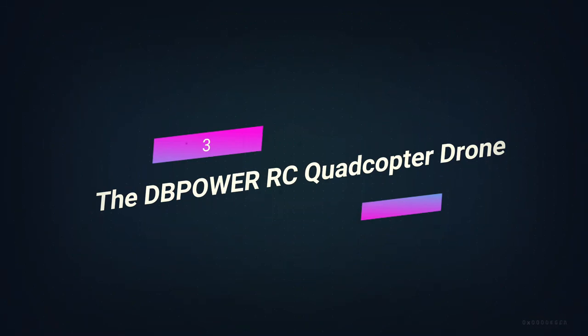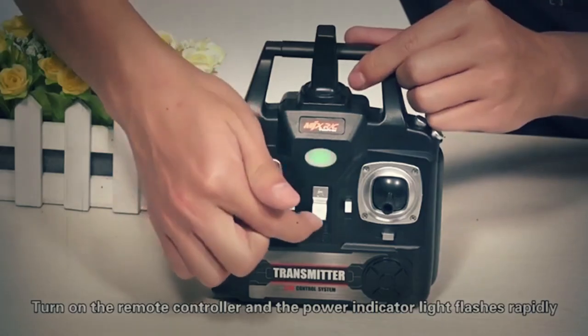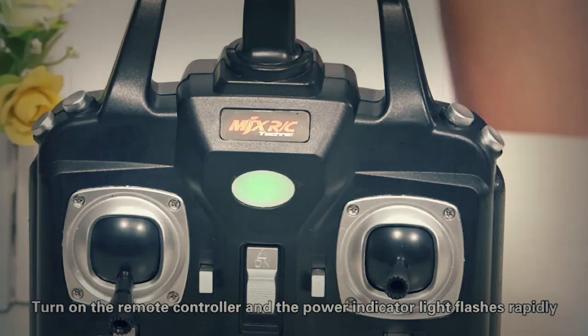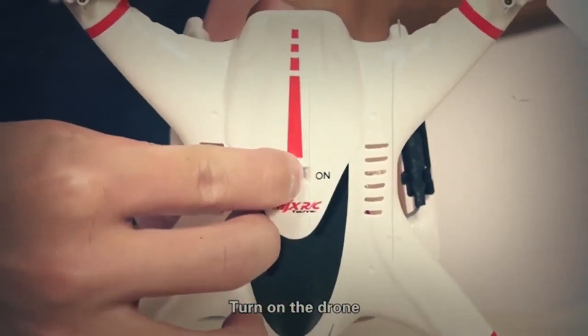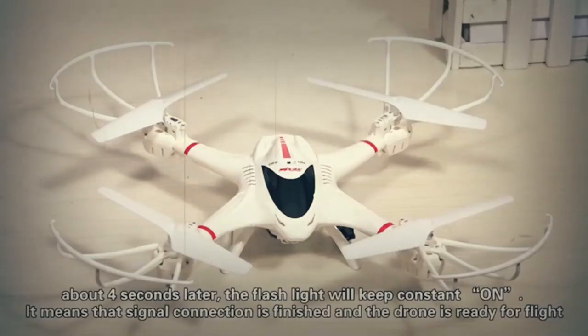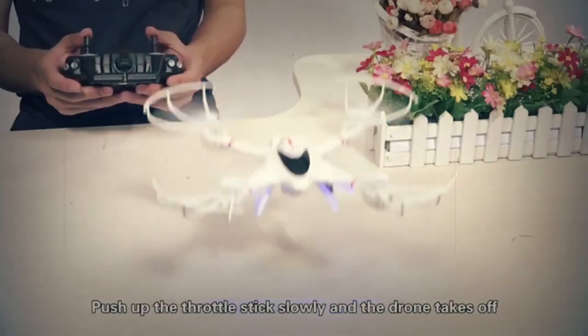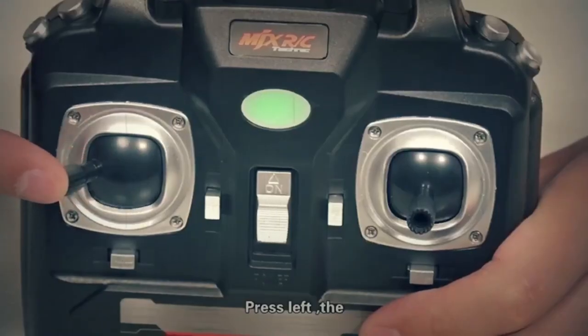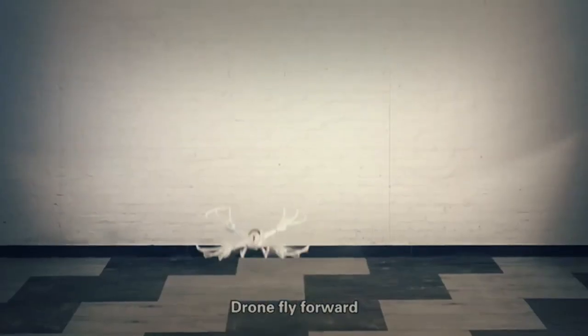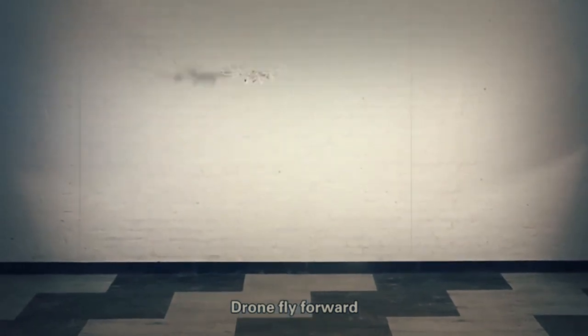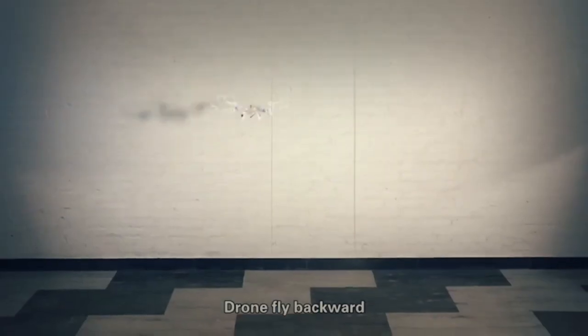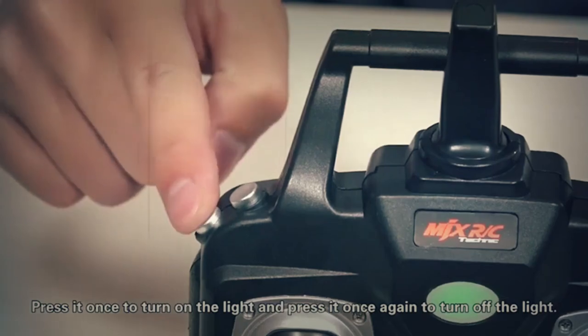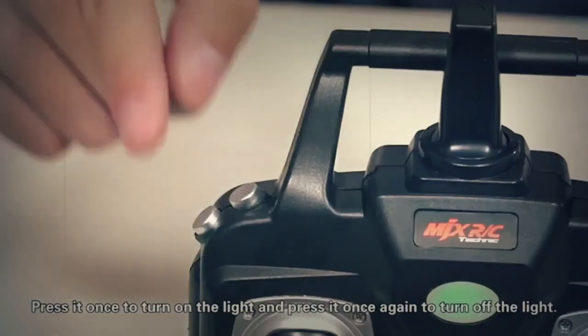Number 3, DB Power RC Quadcopter Drone. This X400W FPV RC Quadcopter drone was made by DB Power using all of its knowledge, creativity, and experience. With this drone, you can reach for the sky and take pictures and videos from a whole new angle. This makes a lot of things possible. You only need to fly this thing while using your phone to control it. Make sure your WiFi is connected to the MJX-H signal and that you have the MJX-H app.